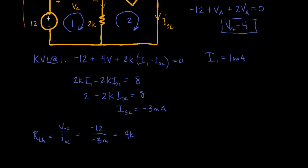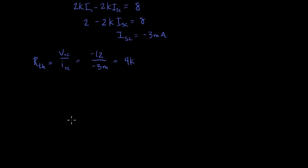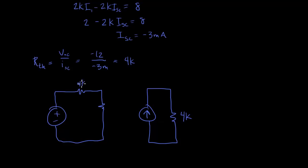And so now we're free to draw Thevenin or Norton because look, we have ISC and we have R_Thevenin. So we could draw it like this or we could draw it like this. 4K here, 4K here. Remember our current is actually negative and our voltage is negative. So that means that these have a flipped polarity. So I didn't draw this correctly.